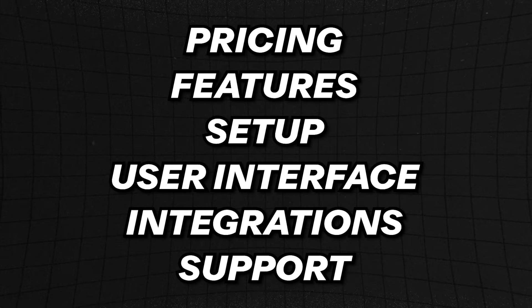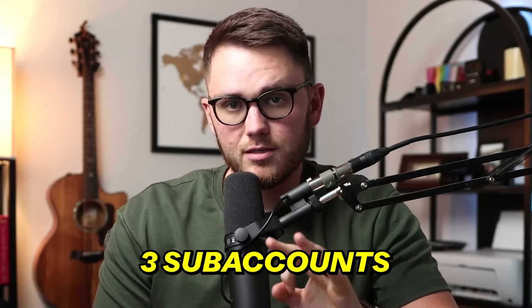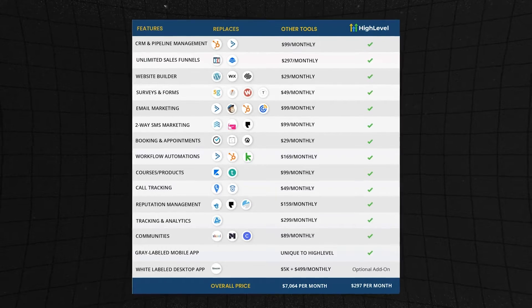First up: pricing. GoHighLevel pricing starts at $97 a month, which includes almost every single feature they have — they really don't feature-gate that much. The catch is you only get three sub-accounts. If you don't know what that means, GoHighLevel was originally built for agencies, so it means you have an umbrella account where you can put three clients or three different businesses underneath it.